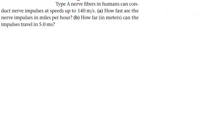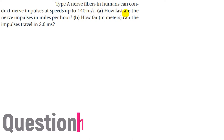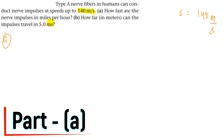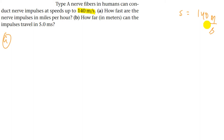This question says that type A nerve fibers in humans can conduct a nerve impulse at a speed of up to 140 meters per second. There are two parts. In part A, we have to find how fast the nerve impulse is in miles per hour — we simply have to convert the unit from meters per second. Let's do it.